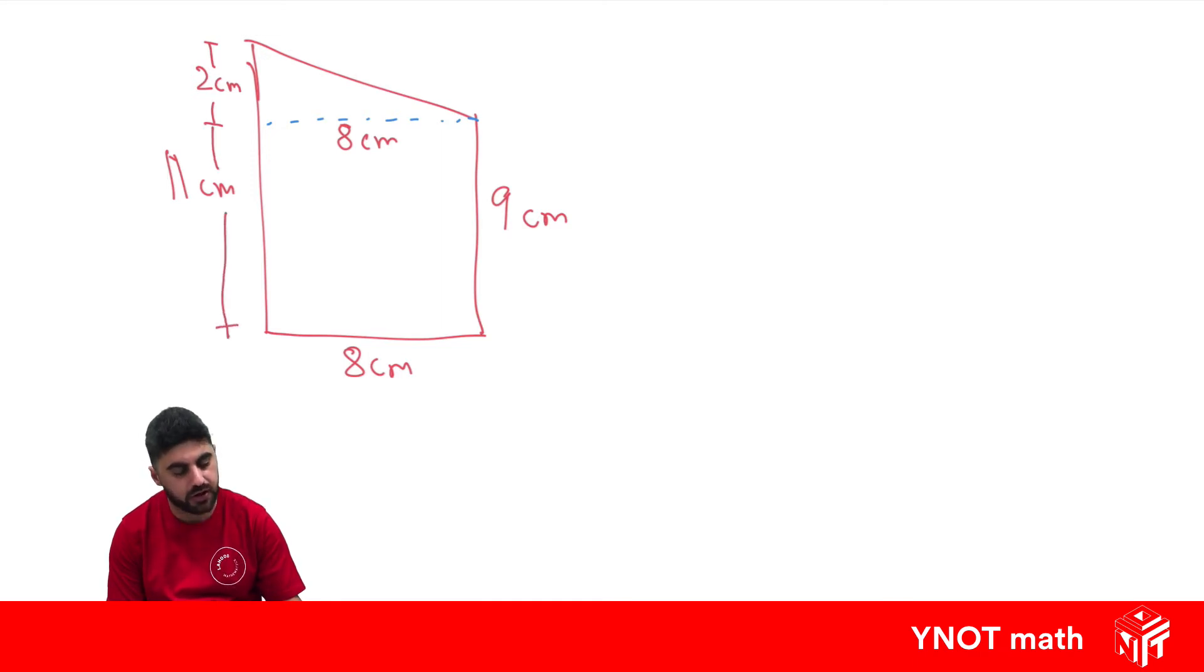So area of this shape is going to be the area of the rectangle plus the area of the triangle. The area of the rectangle is length times breadth, and the area of a triangle is half times the base times the height. So for our